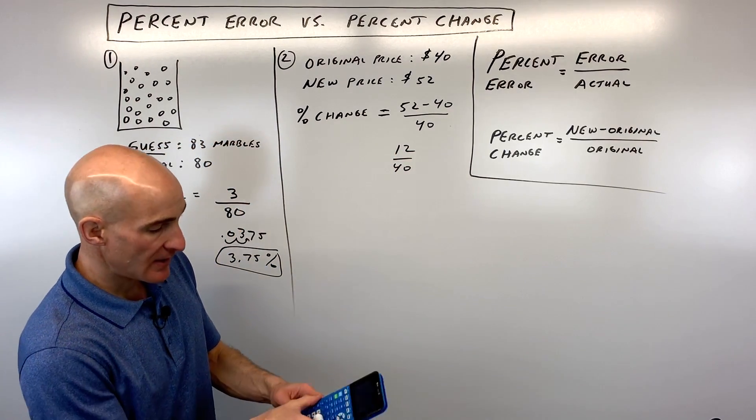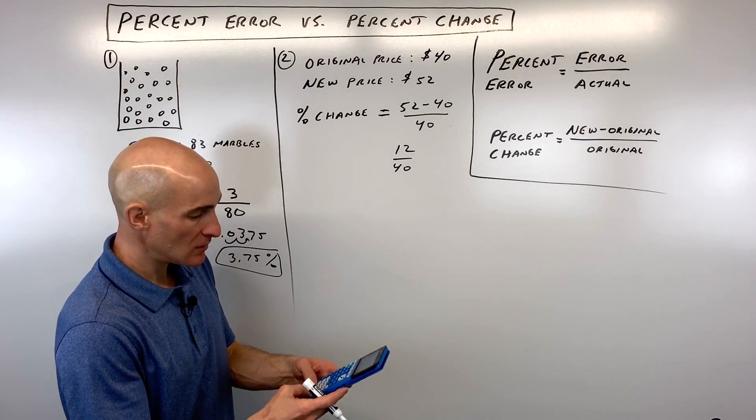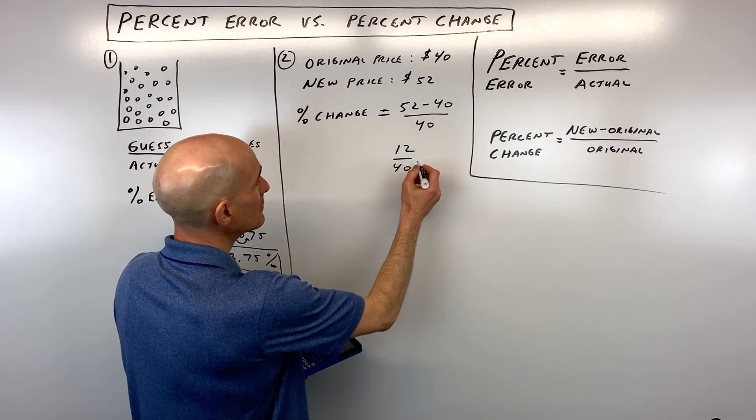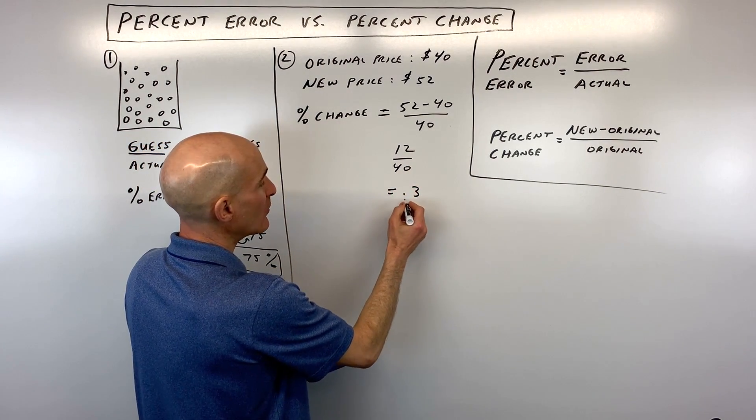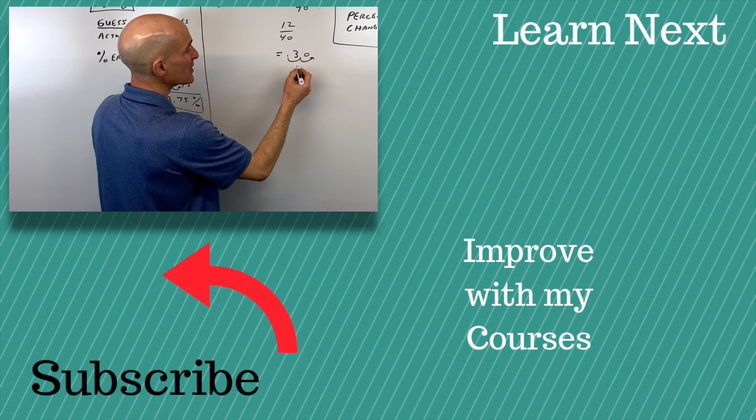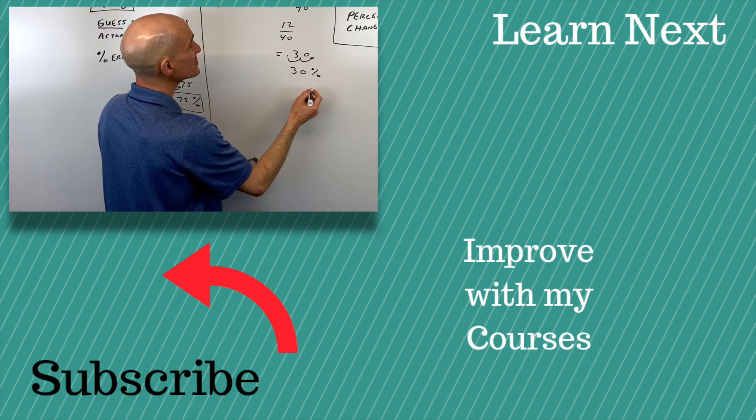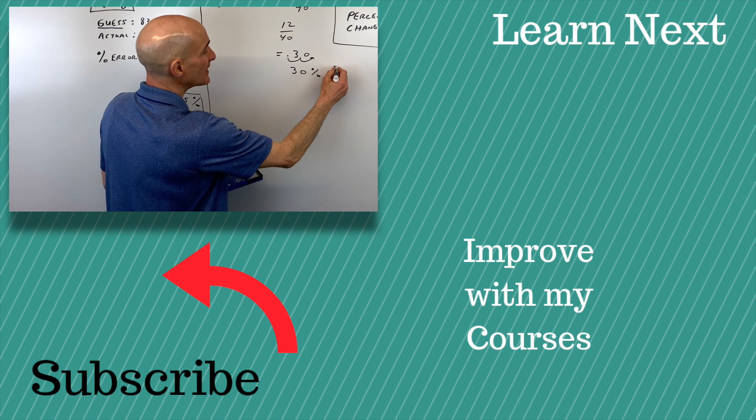Let's go to the calculator again, and that comes out to 0.3. And we just want to move that decimal place two places to the right. We're going to put a placeholder here, so it comes out to 30%. Now, this is a 30% increase.